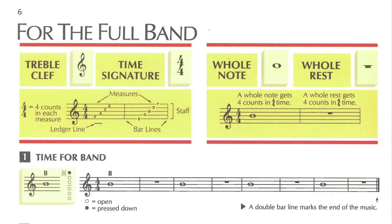Let's start lesson one on page six of the Standard of Excellence by looking at the upper left-hand corner — treble clef. This is important because it's the clef that determines the names of the spaces and lines of the staff.